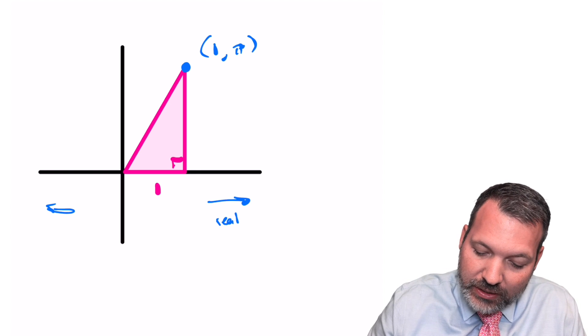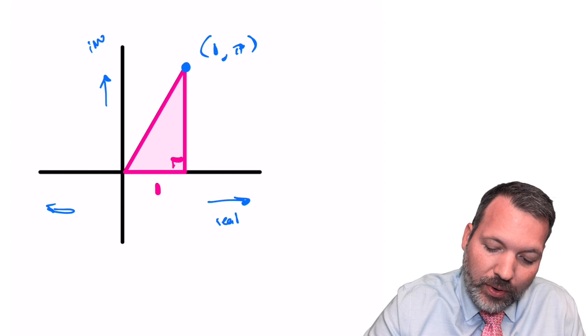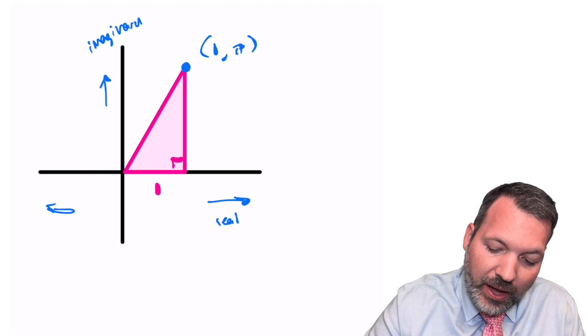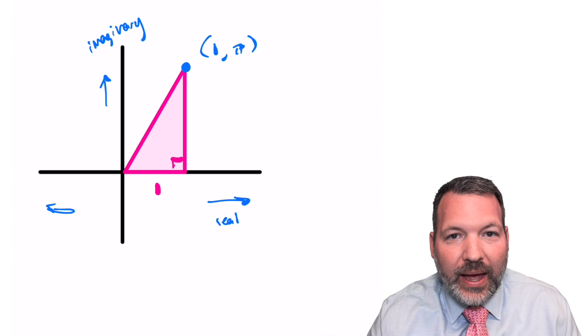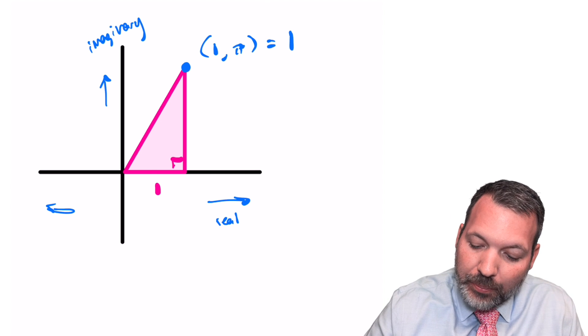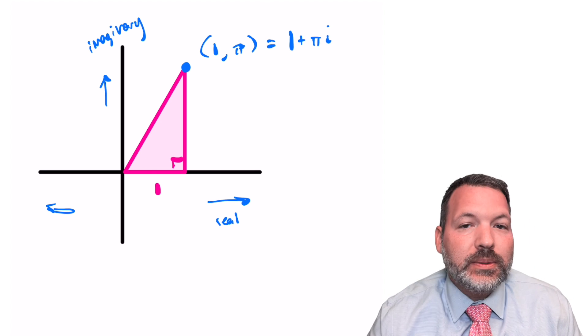We are going to situate a triangle in complex space. So this left to right axis is indeed our real axis, but the up and down axis now represents the imaginary numbers. So if I had a point in this plane, one comma pi, that actually represents the complex number one plus pi i.